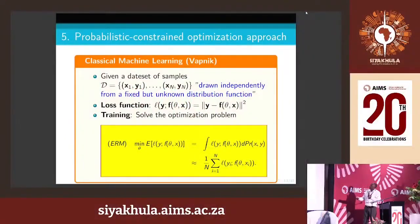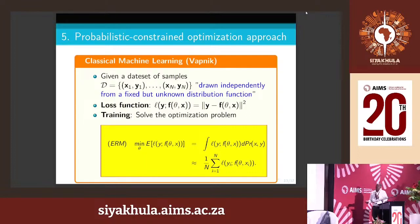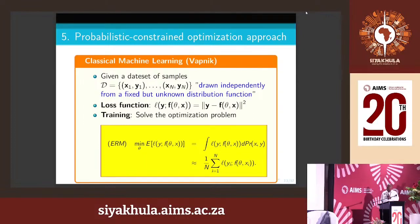Vapnik, in his book from 1973, states: given a data set of samples drawn independently from a fixed but unknown distribution function, the data are samples of certain random variables. The loss function in supervised learning has a standard form in almost every case. According to him, there is a distribution with which we do expected risk minimization, written as an integral of the loss function according to a certain probability measure, assuming data X and Y represent random variables. In classical machine learning, this is the loss function that is usually optimized.